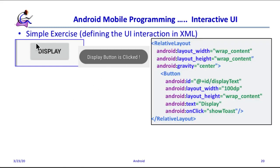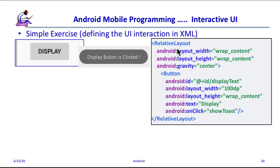First you have to create this button. You go into the layout and create one button there. You have to define an ID and name it. You also have to add an onClick action so that whenever it is clicked, it will execute the showToast method, which will be defined in a separate program. This is done in the XML.